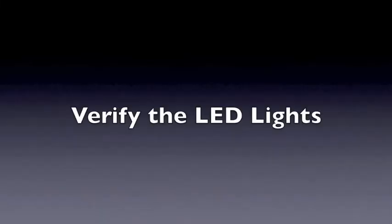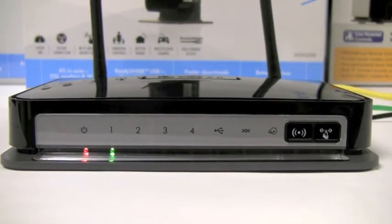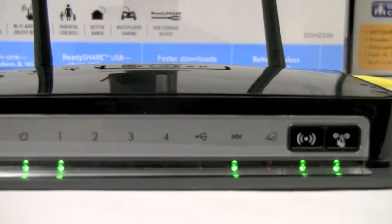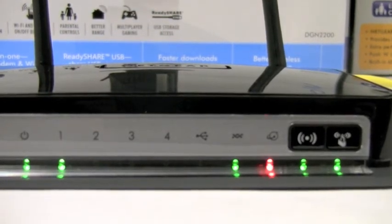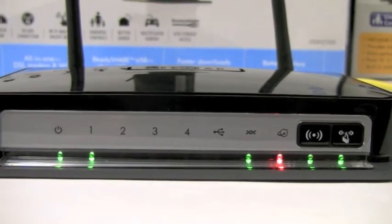Once the Netgear gateway router is powered on, verify that it is detecting the line properly by looking at the LED front display. The twisted cable LED will blink while the Netgear gateway router is synchronizing with the line. This LED will turn solid green once synchronization is complete.